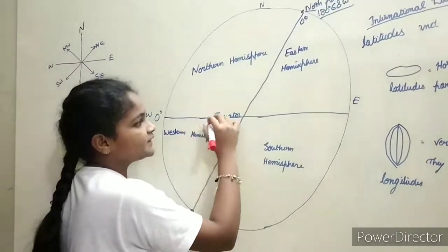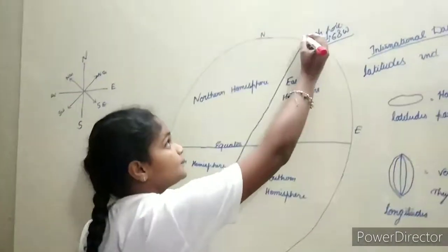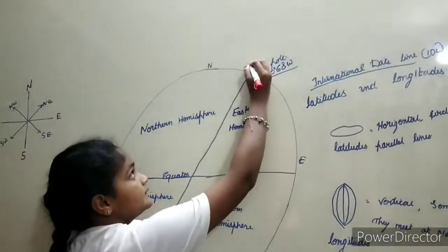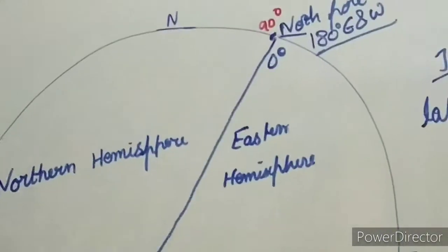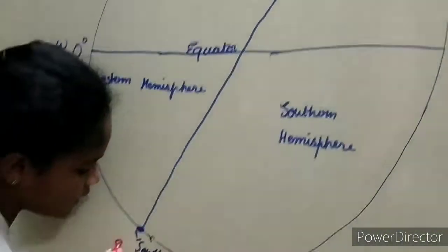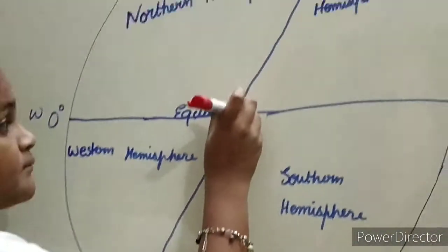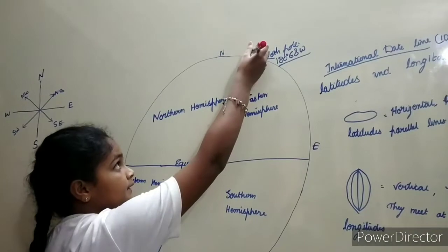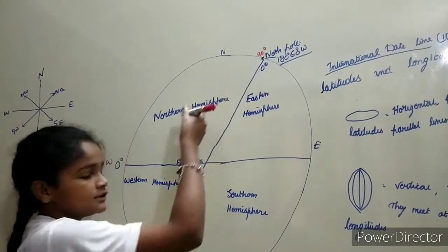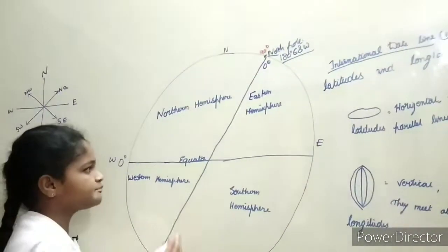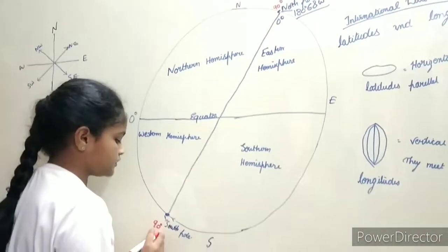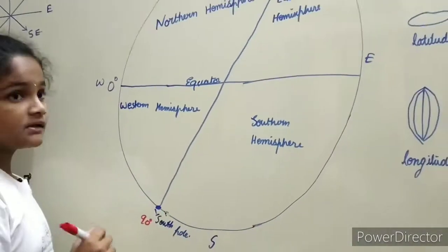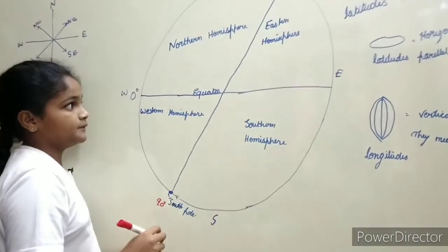The Equator is zero degrees. The North Pole is 90 degrees and the South Pole is 90 degrees. From zero degrees to 90 degrees north is the Northern Hemisphere. From zero degrees to 90 degrees south is the Southern Hemisphere.